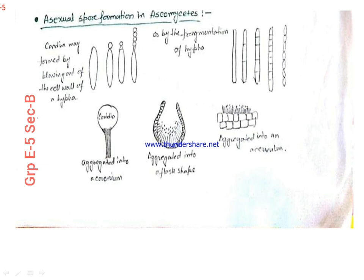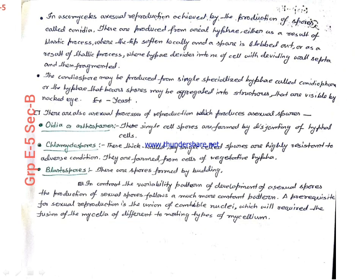In ascomycetes, conidia are the spores that are formed. They can be formed either by the blastic process or by the thallic process. In the blastic process, the cell wall blebs out and a spore is blebbed out where the wall softens locally. In the thallic process, the hypha divides into a number of cells with dividing wall septa and then it gets fragmented.